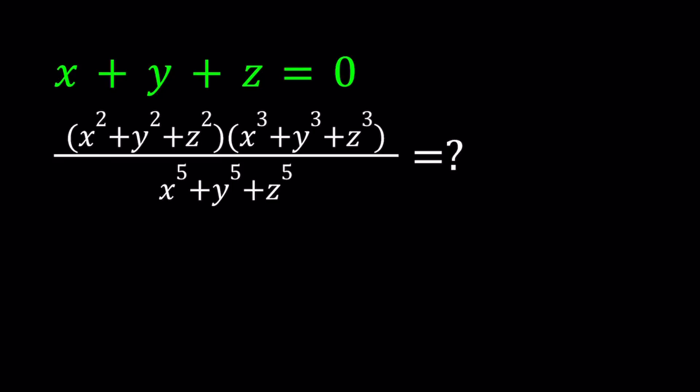Hello everyone. In this video, we're going to be simplifying an algebraic expression. We have x plus y plus z is equal to 0, and we're supposed to evaluate this expression. Obviously, you wouldn't always know that this is going to turn out to a numerical value, but in this case it does, and we're going to find that value. I'm going to be presenting two methods, and also briefly mention an alternative, but I won't complete that third method. So let's start with the first method.